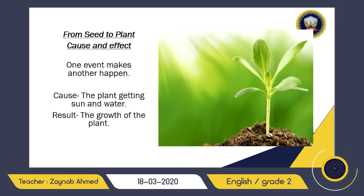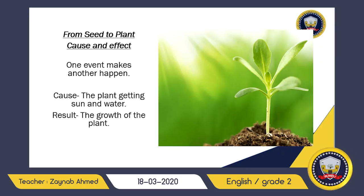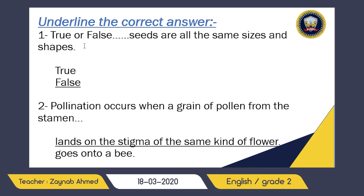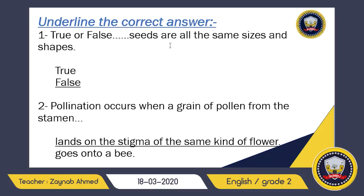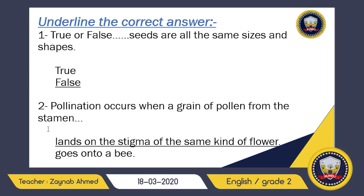Now we are done recalling our lesson 'From Seed to Plant,' so let's move to the question and answer part. Don't worry — it's not a quiz, we will answer the questions together. Number one, true or false: seeds are all the same sizes and shapes. Seeds are not the same — some seeds are small, some are big — so it is false.